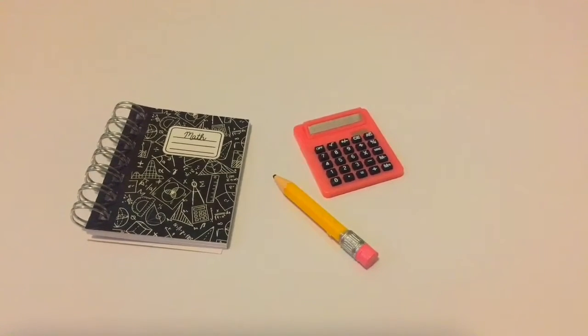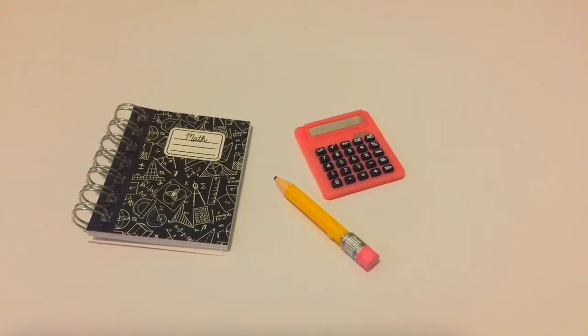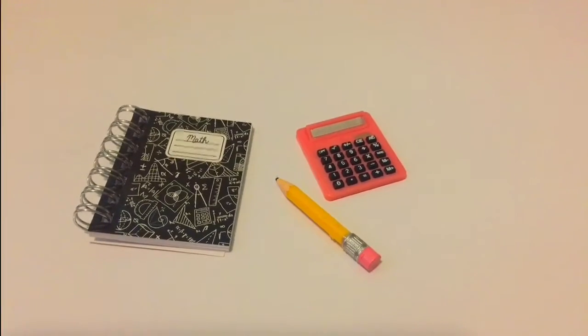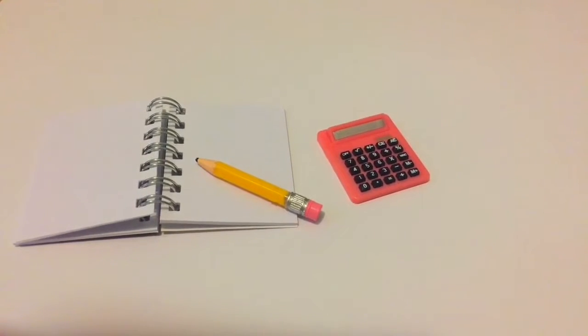The first three items is a math book, a pencil, and a calculator. The calculator is a peach color, and the math book is black with little drawings on it. The math book opens so your doll can write all her math problems inside.